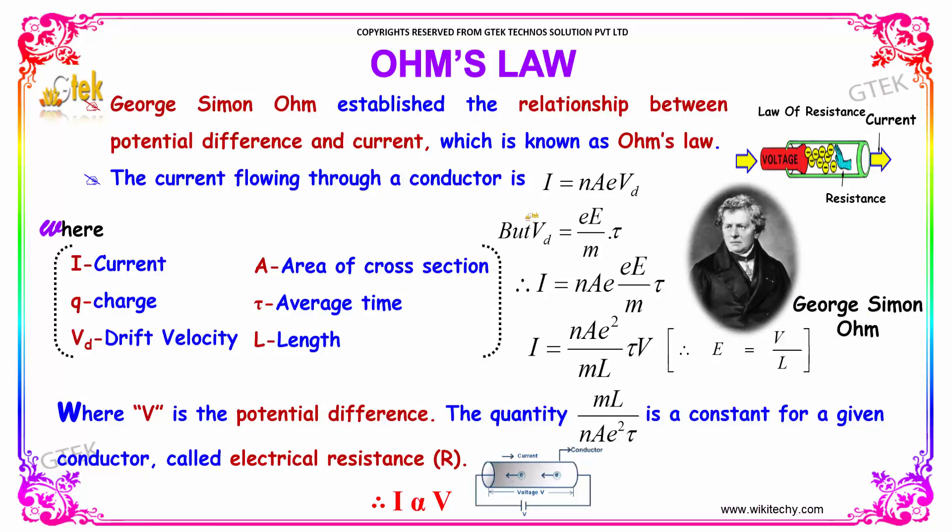The current flowing through a conductor is given by I is equal to N into A into E into Vd. The drift velocity Vd is equal to E into E by divided by m into tau. Substituting the value of drift velocity Vd in this equation, we will be getting I is equal to N into A into E into E divided by m into tau.